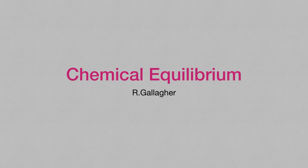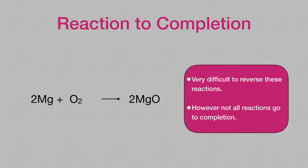Chemical Equilibrium. Pretty much all the reactions we have dealt with so far have been reactions that go to completion no matter the conditions. For instance, magnesium will react with oxygen to form magnesium oxide regardless of temperature or pressure. It would be very difficult to reverse this type of reaction.